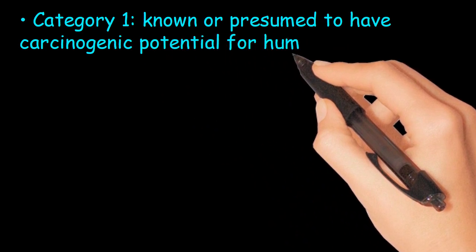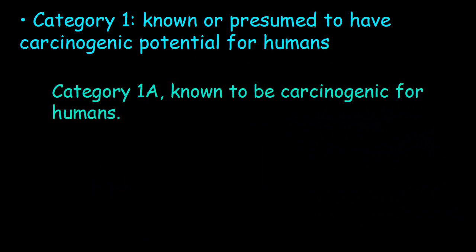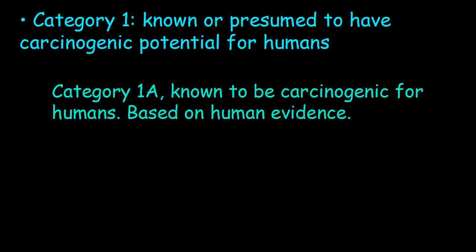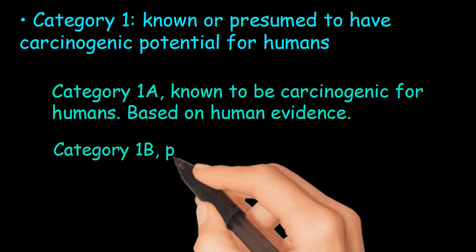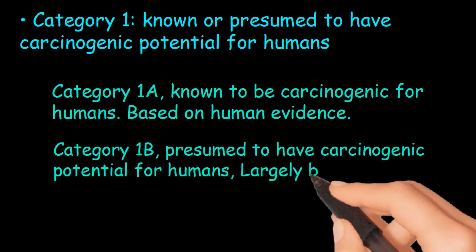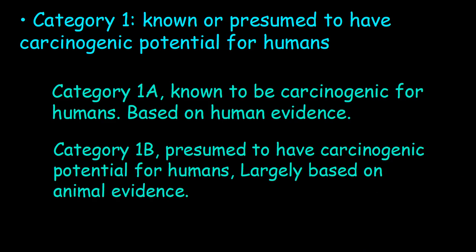Category 1: Known or presumed to have carcinogenic potential for humans. Category 1A: Known to be carcinogenic for humans, based on human evidence. Category 1B: Presumed to have carcinogenic potential for humans, largely based on animal evidence. The difference is clear — one is a confirmed carcinogen and the other is a presumed carcinogen.